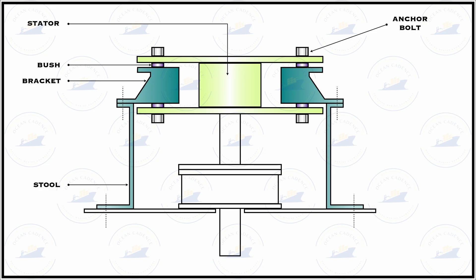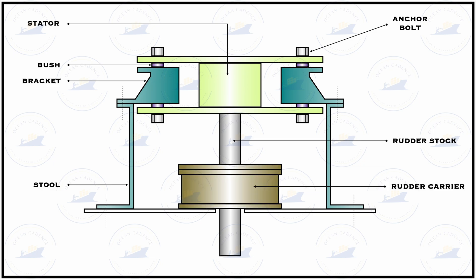In the side cross-section view, the rudder stock passes through the rudder carrier and penetrates to the lower side, connecting to the rudder. The rudder carrier provides not only the carriage but also the securing and segregating section, allowing the rudder stock to penetrate safely, while also sealing and carrying the sealing space of the rudder stock.